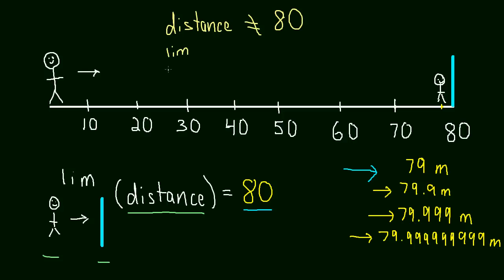But the limit, the limit of the distance, the limit as this guy approaches the wall of the distance, the limit of the distance does equal 80. And the fact that there's that discrepancy, that the distance will never be 80, but the limit does equal 80, is really what helps us out in calculus. This is what we're going to be using to deal with some things that are almost conundrums, if you think about them.